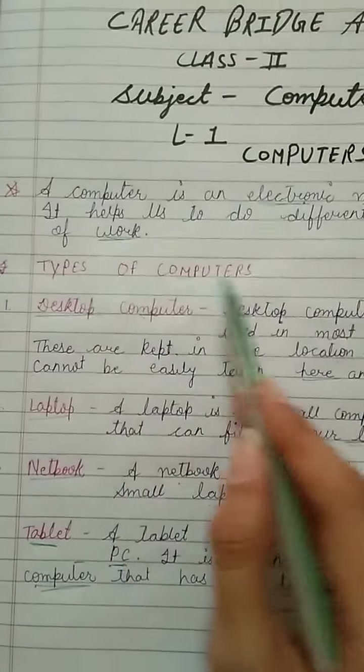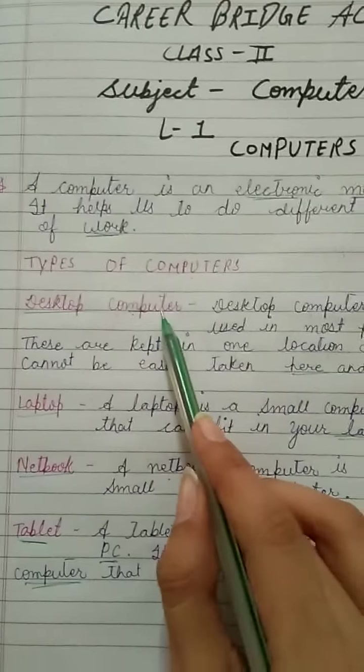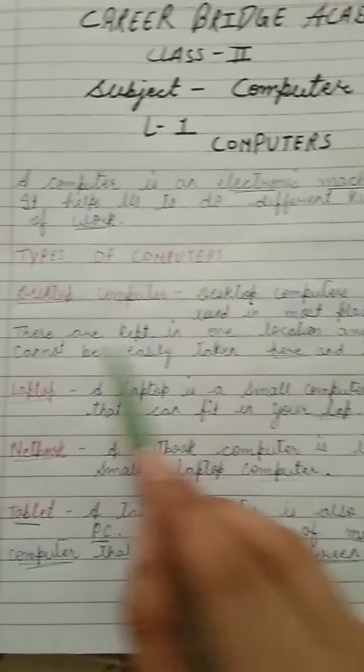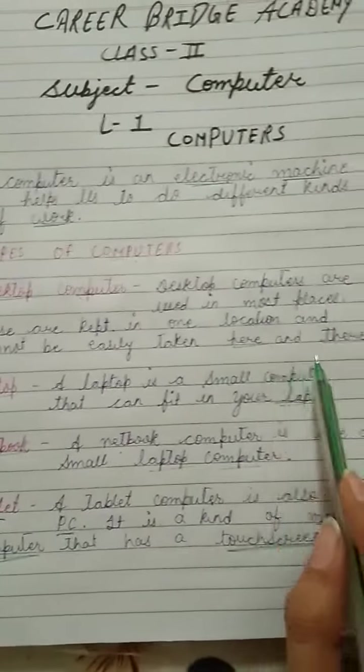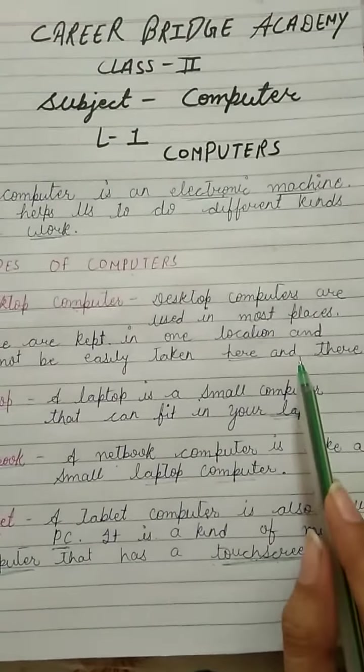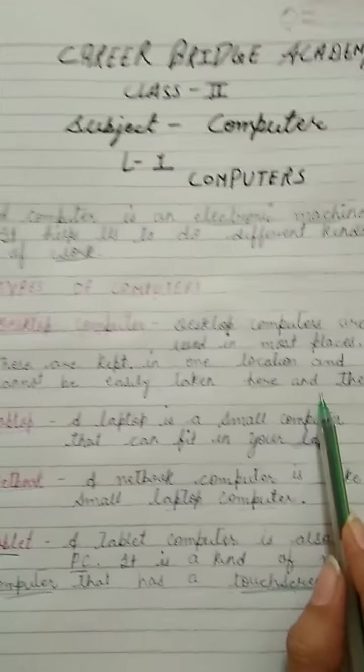Next is types of computer. First, desktop computer. Desktop computers are used in most places. These are kept in one location and cannot be easily taken here and there. Just like this type of computer, you can't carry it easily.